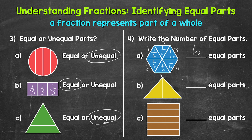Moving on to B, we have a triangle divided into one, two equal parts. So we have halves here — each part is one-half of the whole. Lastly, for C, we have one, two, three, four, five equal parts. So fifths — each part is one-fifth of the whole.